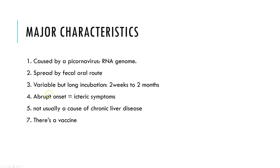Once it starts, it gets going with a really abrupt onset of icteric symptoms. There are three stages: the prodrome phase begins with malaise, low-grade fever, rash, and arthralgia. Then the pre-icteric phase brings anorexia, nausea, vomiting, headache, food aversion, and diarrhea — all fairly nonspecific. What starts tipping you off to liver involvement is right upper quadrant pain.